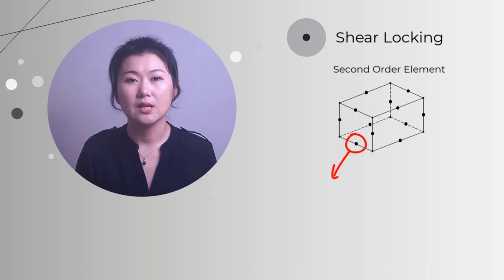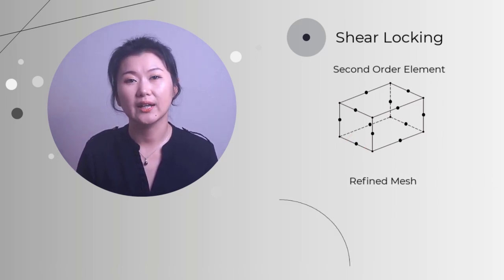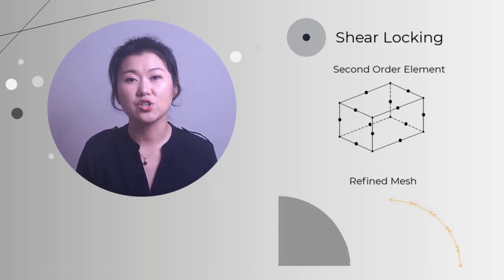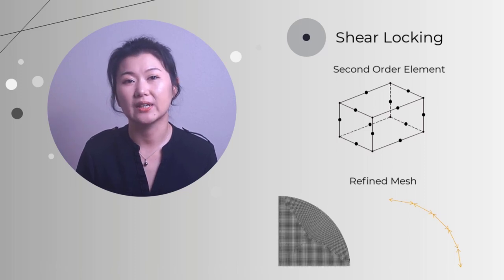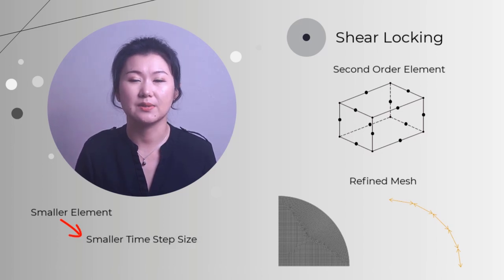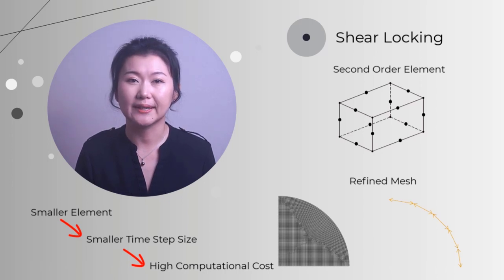Another solution for shear locking is to use second-order element with full or reduced integration. Because with middle nodes, the element can better represent the curved edge and therefore generate less artificial shear stress. Also, refining the mesh can be helpful to reduce shear locking. We know that a curved line can be accurately represented by many short straight lines. So when the mesh is more and more refined, the deformation pattern of the linear full integration element becomes closer and closer to the reality. However, remember that smaller element leads to smaller time step size in explicit dynamics, requiring more computational cost, which is something we need to consider in making the decision.